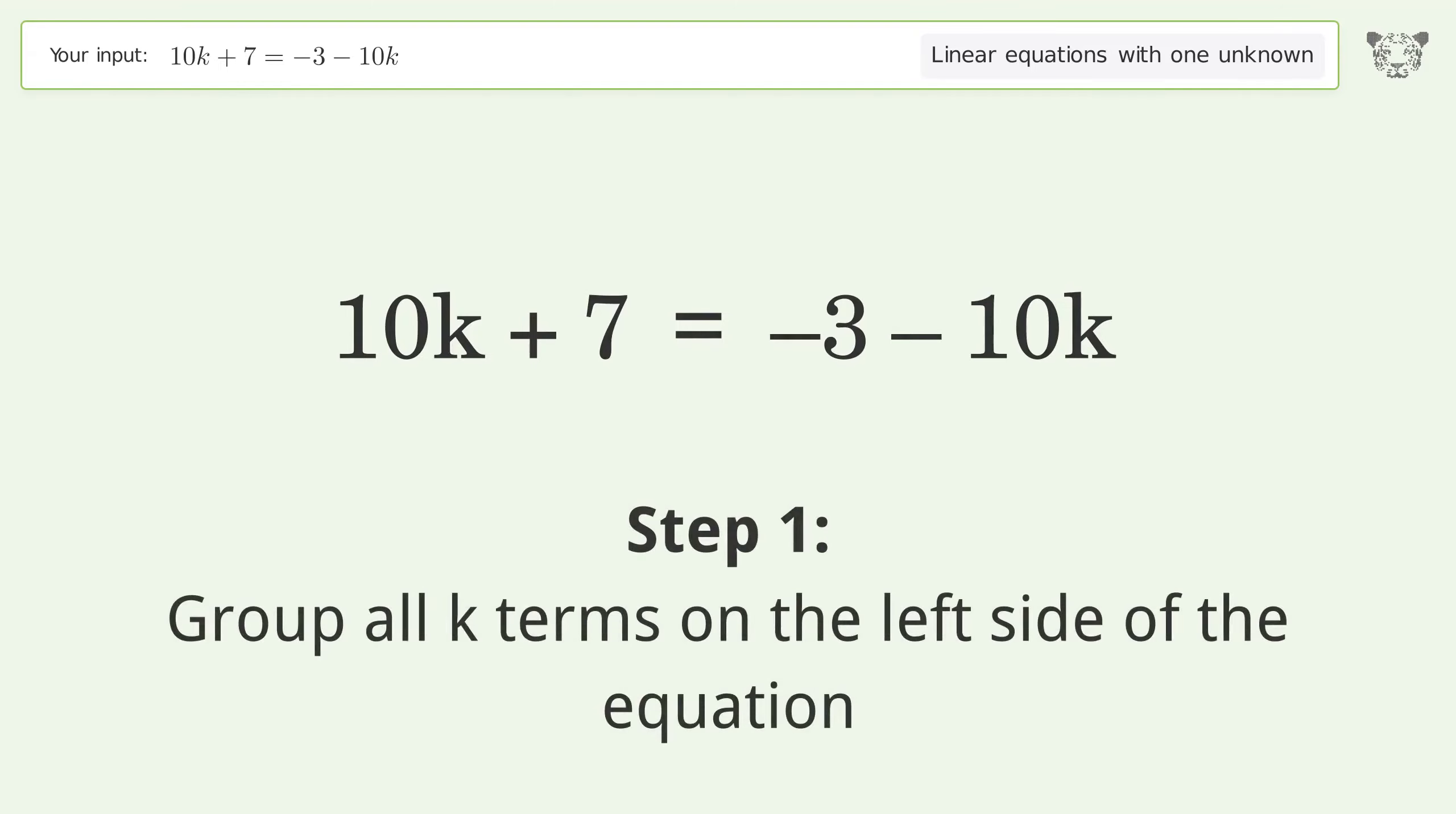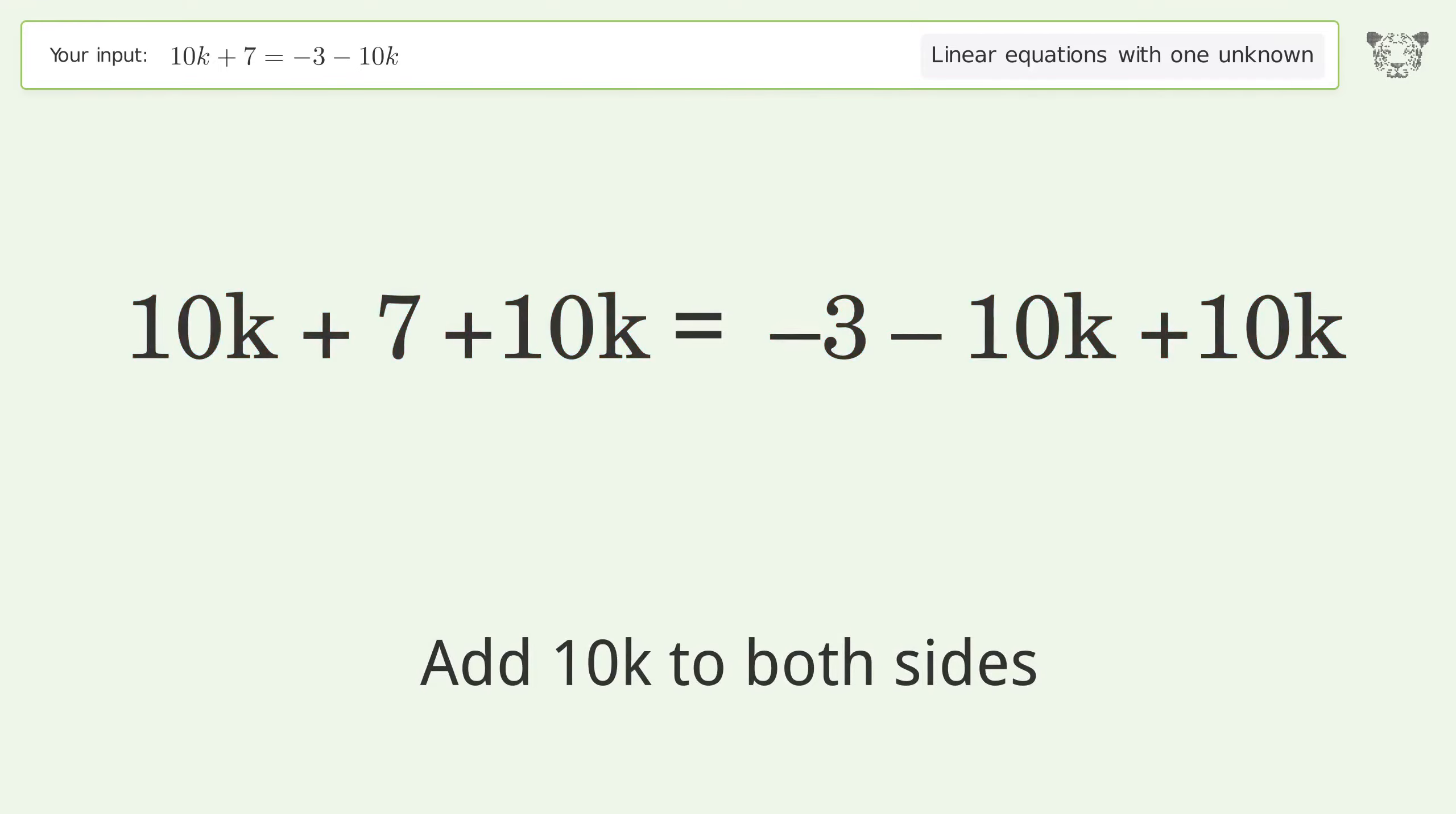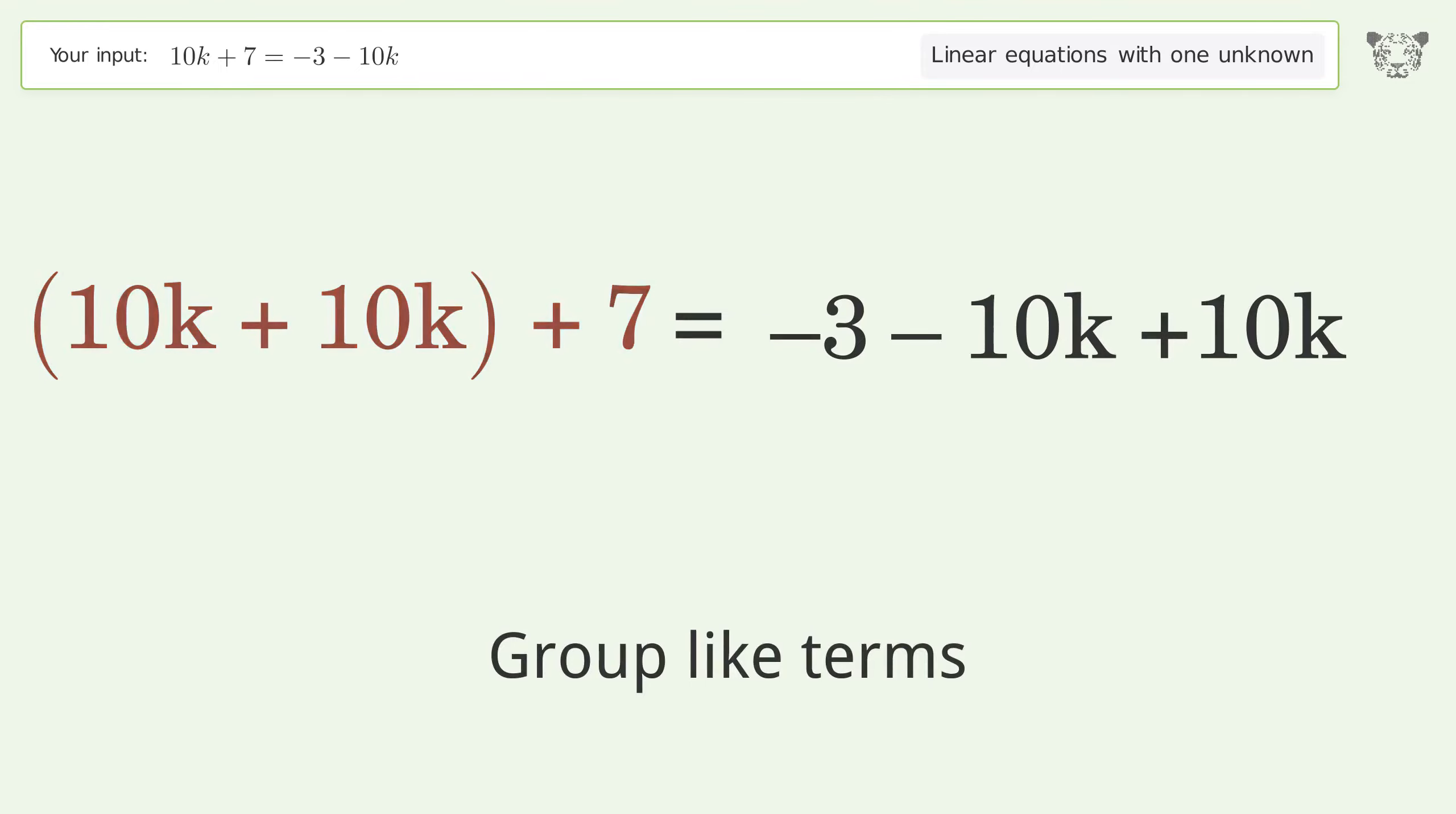Group all k terms on the left side of the equation. Add 10k to both sides. Group like terms and simplify the arithmetic.